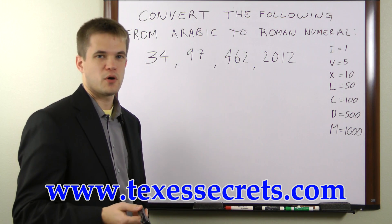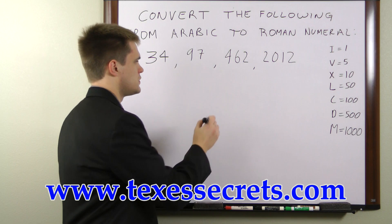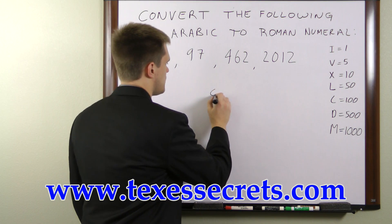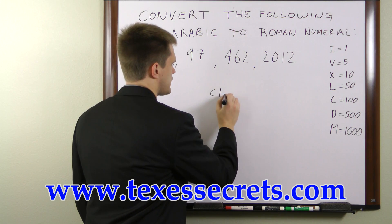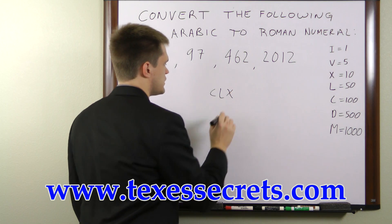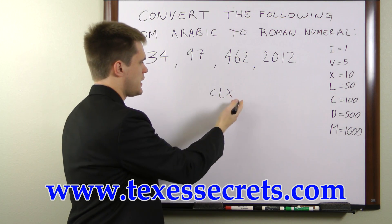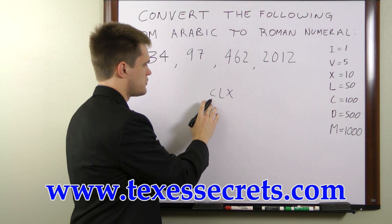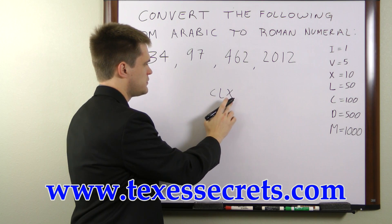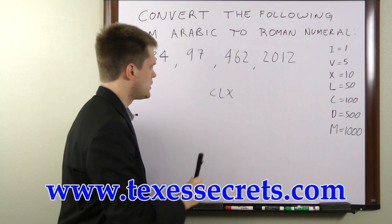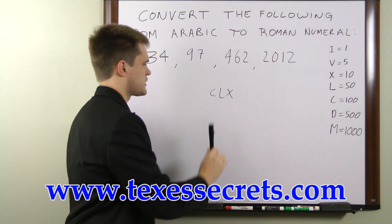The rules for adding them are simple — you just sum up the individual values for each of the terms. For instance, CLX is 100 plus 50 plus 10, so 160.